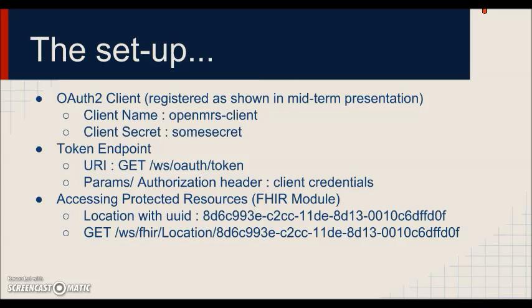So I have an OAuth2 client which has the following client credentials. You can see the token endpoint is /oauth/token, and either in the parameters or in the authorization header we include the client credentials. For accessing the protected resources we are going to access the following location resource which has this UUID, as you can see.